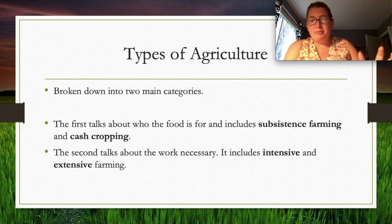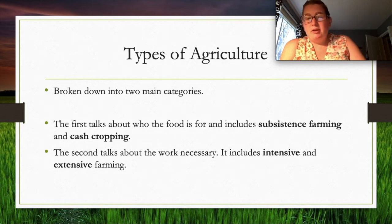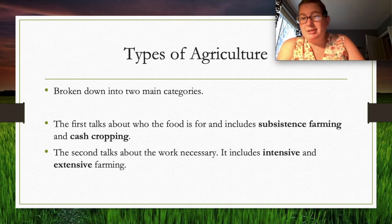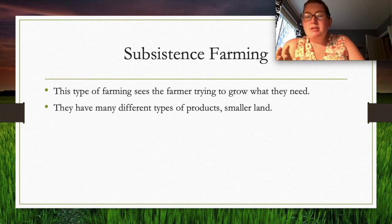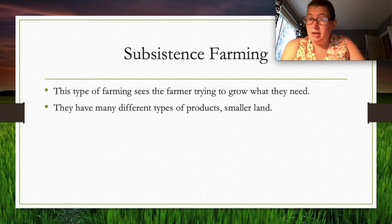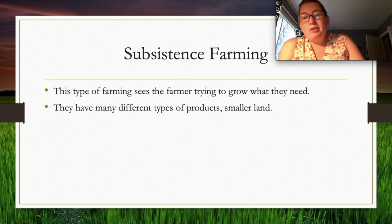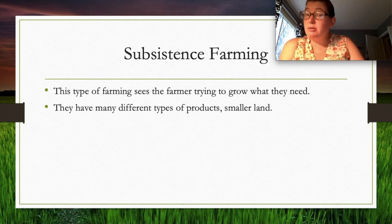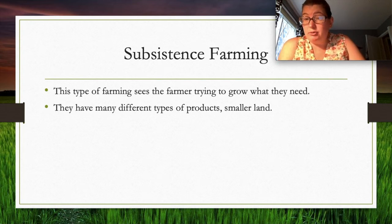We break agriculture into two major types. The first is based on purpose: subsistence farming and cash cropping. The second is based on work intensity: intensive and extensive farming. Subsistence farming means growing just enough food to feed yourself — usually a variety of products on a smaller piece of land, like cows, sheep, pigs, corn, beans, and squash, all to support yourself.